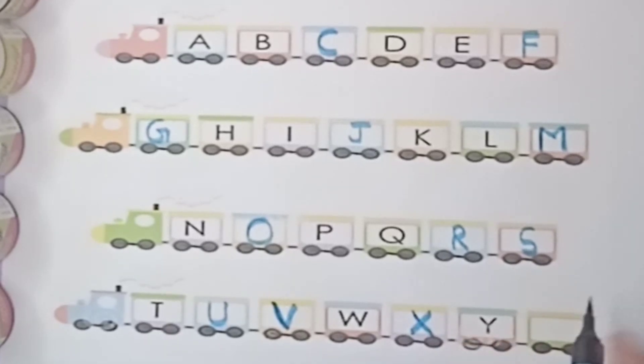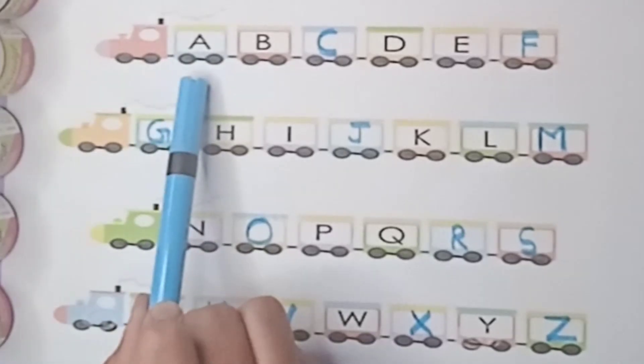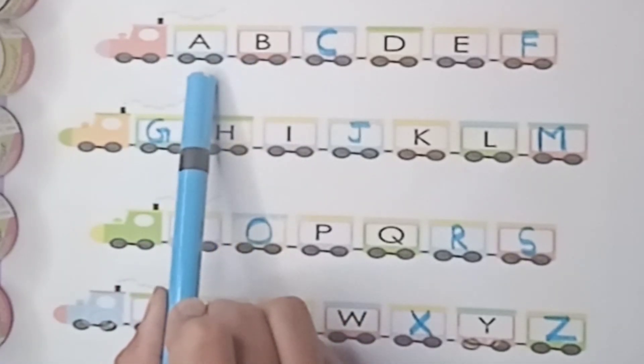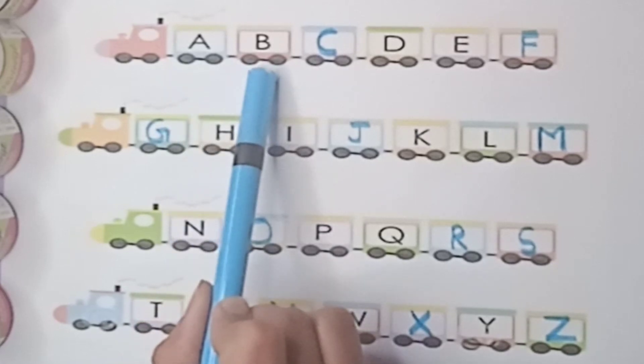W, X. What comes after W? X, Y, and Z. Z for zebra, very good. Now start reading.